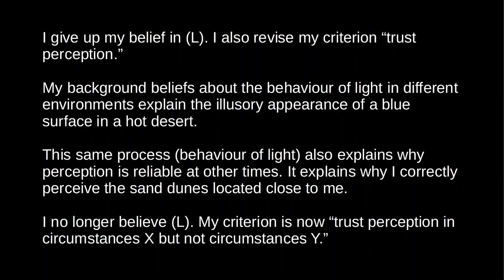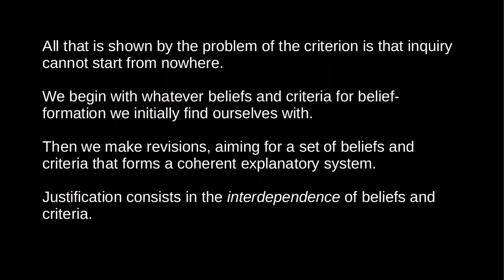This example is obviously simplified, but it illustrates the general idea. As the coherentist sees it, what the problem of the criterion shows is simply that we can't start from nowhere. We start with whatever beliefs and criteria for belief formation we initially find ourselves with, but then we revise each of these in light of new data, weighing each against the other until we have a coherent explanatory system. Justification and knowledge consist precisely in the interdependence of belief and criteria for belief. The coherentist denies that in order to know what is true we must have an independent criterion for truth, and she denies that in order to have a criterion for truth we must independently know what is true — she takes it that our two questions are answered simultaneously.